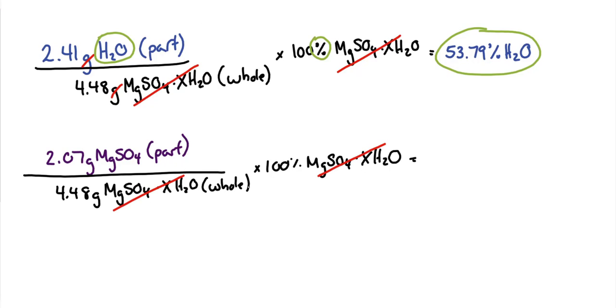Again, if you look at the units that are going to cancel, we'll see grams go away and the hydrated salt go away, but the percent sign and magnesium sulfate, the anhydrous magnesium sulfate, will remain. We end up with 46.2% magnesium sulfate.